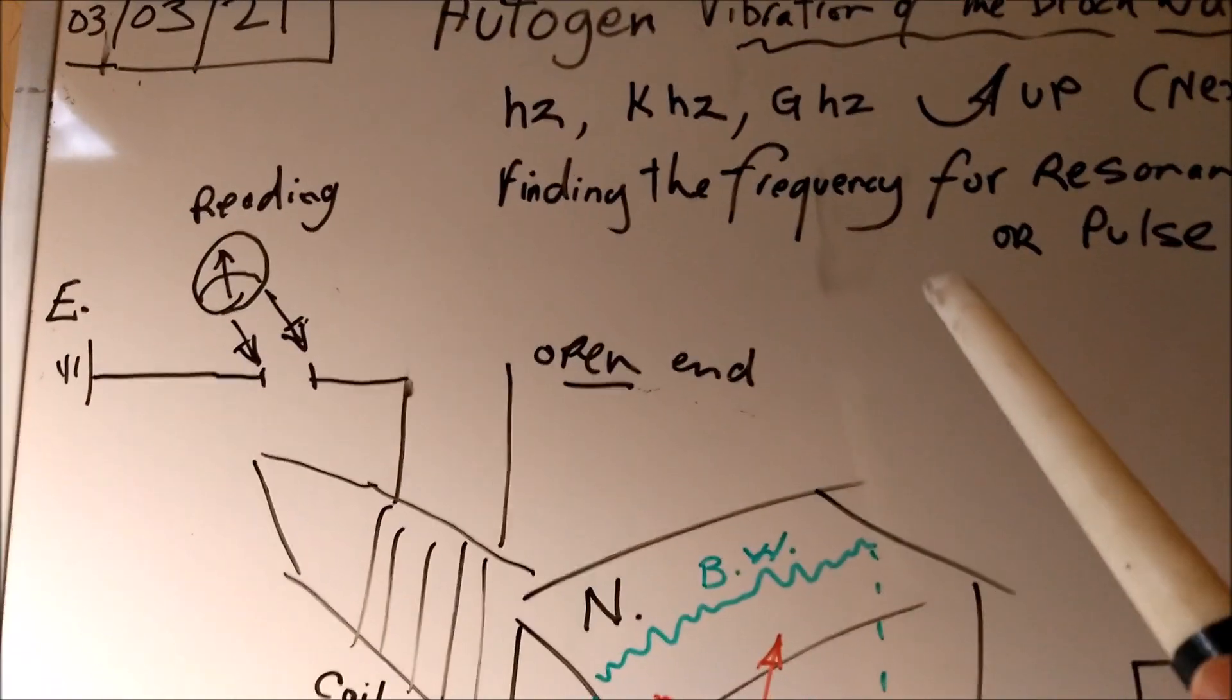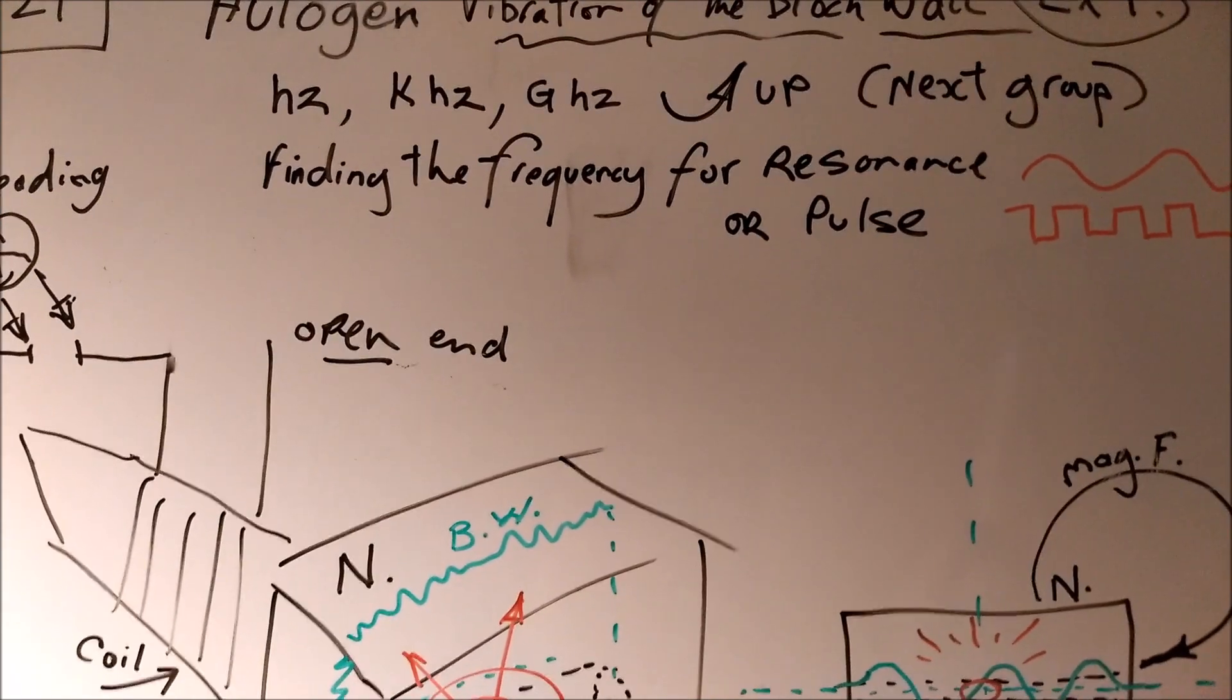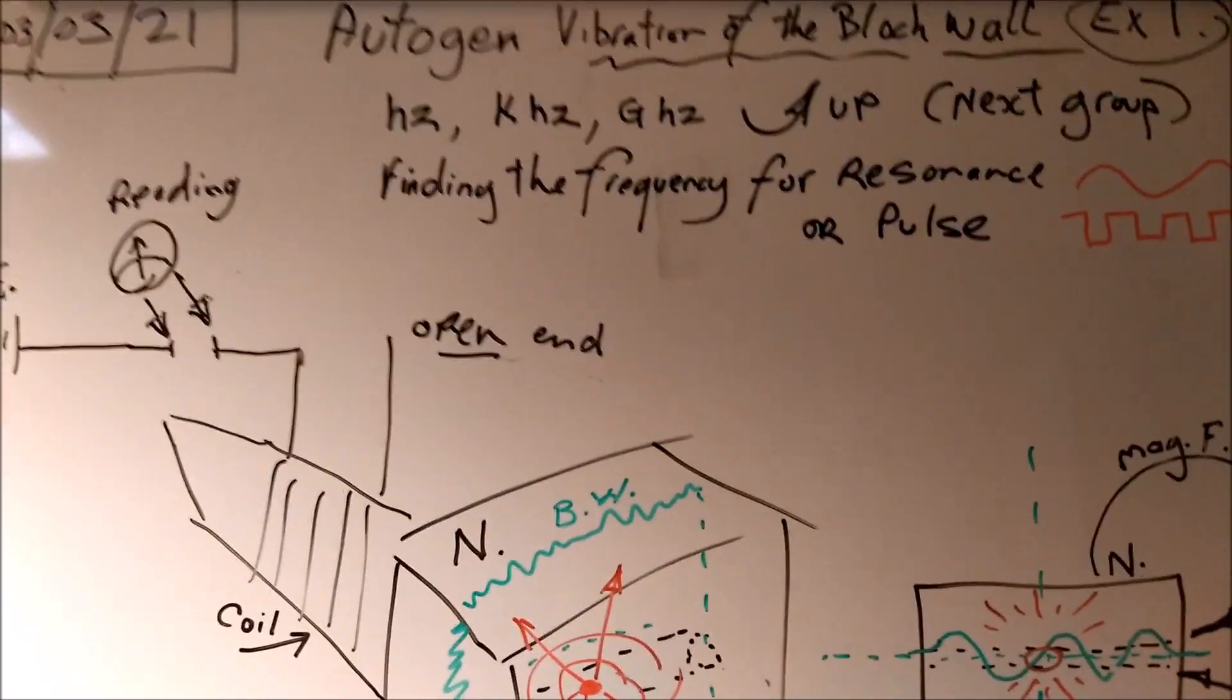We're trying to find the frequency for resonance and also pulse. I'm looking at a square wave pulse first of all, and then I'll explore other waveforms.